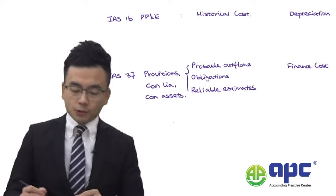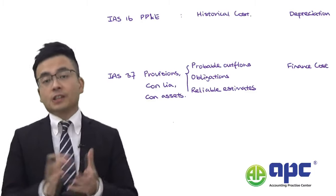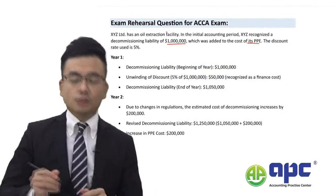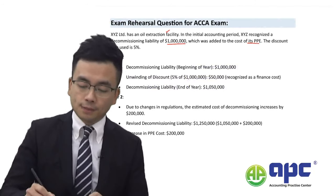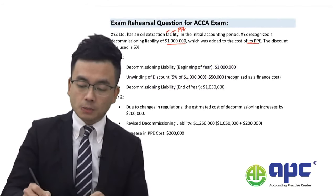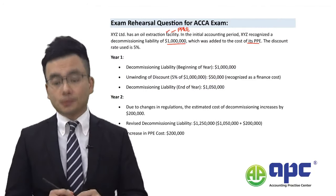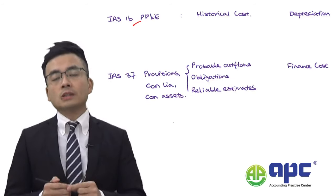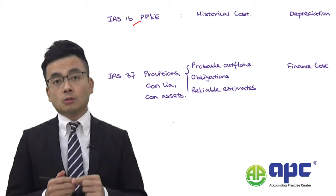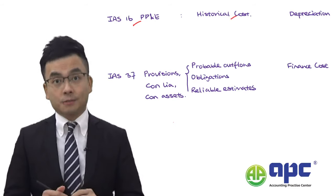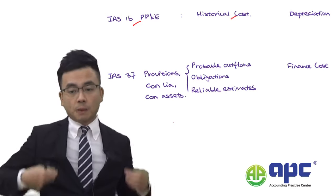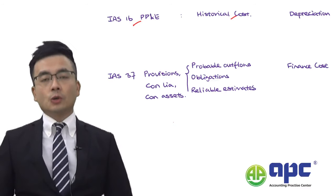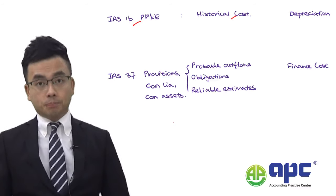For the decommissioning liability, the transaction is related to the oil extraction facility, which is an item of PP&E — property, plant and equipment. According to IAS 16, it needs to be recorded and measured at historical cost at the very start. So how much money you've paid for that oil extraction facility, you'll need to capitalise it as property, plant and equipment.